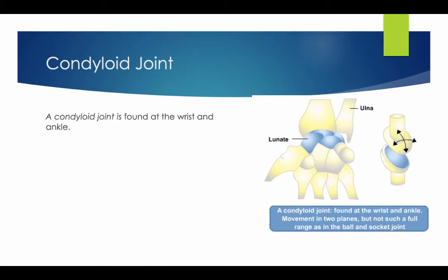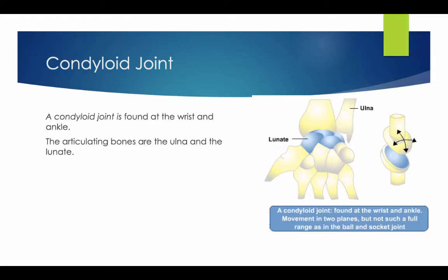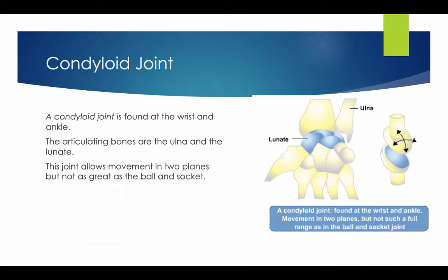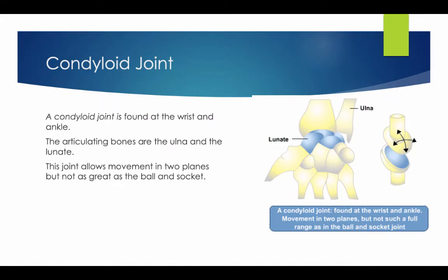The condyloid joint is found at the wrist and the ankle. The articulating bones are the ulna and the lunate. A condyloid joint allows movement in two planes, but not as great a range as the ball and socket.